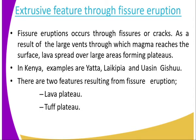Fissure eruption occurs through fissures or cracks, as a result of large vents through which magma reaches the surface. Lava is sprayed over large areas, forming plateaus. When it comes through the fissures and cracks, it is sprayed over a large area forming plateaus. In Kenya we have plateaus like Uasin Gishu — all these are plateaus formed when magma erupted through the fissure.